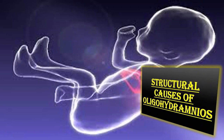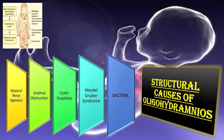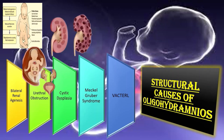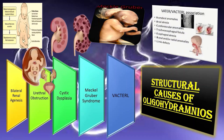The structural causes of oligohydramnios include: first, bilateral renal agenesis or dysplasia, which occurs for example in Potter syndrome; second, urethral obstruction; third, cystic dysplasia; fourth, Meckel-Gruber syndrome; and fifth, VACTERL syndrome — a combination of vertebral anomalies, anal atresia, cardiovascular anomalies, tracheoesophageal fistula, esophageal atresia, renal or radial anomalies, and limb defects.